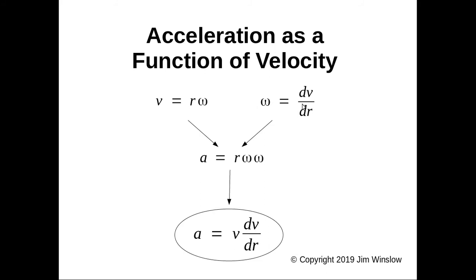So ω = dv/dr. We do a substitution of this and this into here and what we get is a = v·dv/dr. Now this is just the basic equations of centripetal acceleration but in a form that's not very common. It's useful for us though.